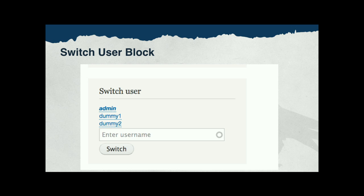Folks have been curious if the switch user block is still part of Devel in D8 — it is. Switch user is a way to quickly masquerade as another user on the site. Given sufficient permissions, you will be offered a list of users to quickly log in as. In this screenshot, the current user is admin — his name is bolded, indicating you're logged in as admin. You can easily log in as dummy one or dummy two, and then log back into your main account whenever you're done testing how the site looks as another user.